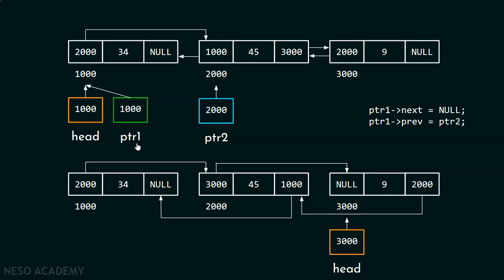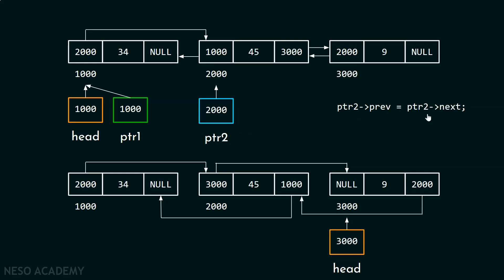Now we have to update the next part and prev part of the second node. We can see that ptr2 is already pointing to this node. Let's try to update the prev part of this node using ptr2. I will use the line of code: ptr2 prev equal to ptr2 next. According to the required state, this must contain the address 3000, which is the address of the third node. And ptr2 next is 3000, so we will place this over here.